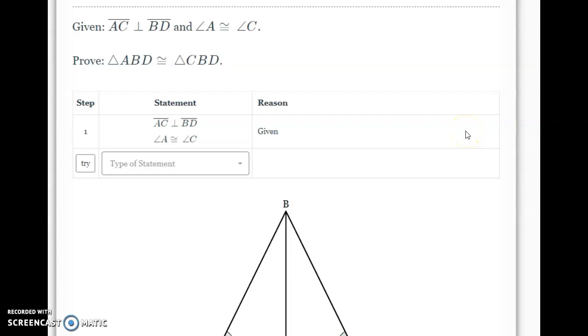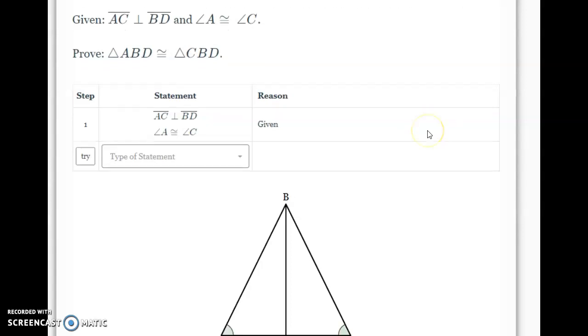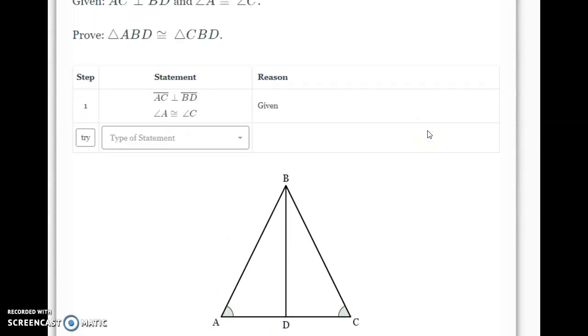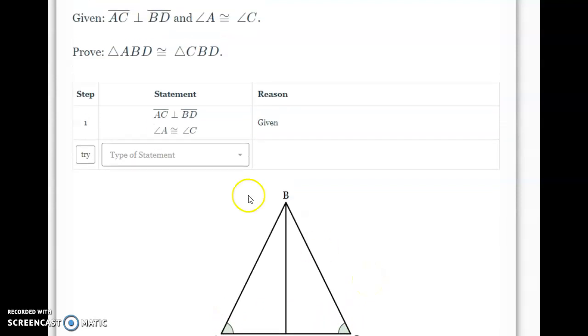I'm given that AC is perpendicular to BD, and that angle A is congruent to angle C. You'll see in our diagram that those congruent angles are already labeled. When I look at my proof setup, I already start with step 1. They did that for you with your given statements. Notice that when I hover my cursor over these two statements, it will highlight on the diagram where those are located.